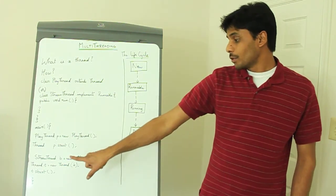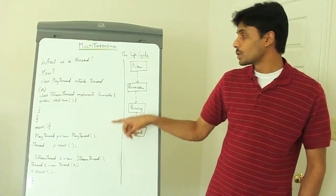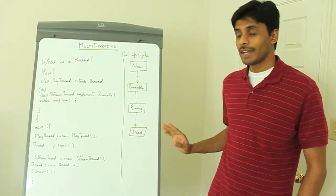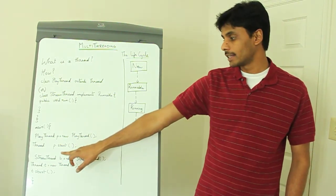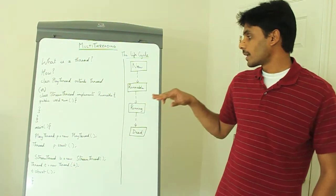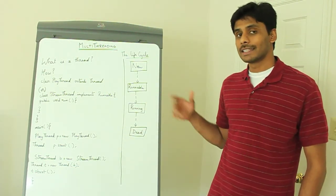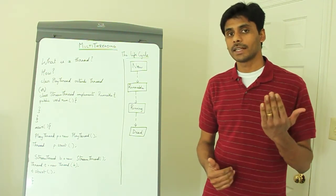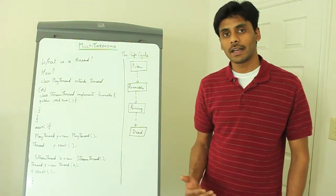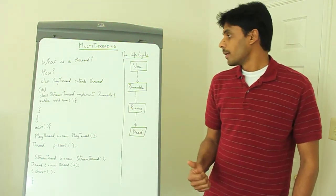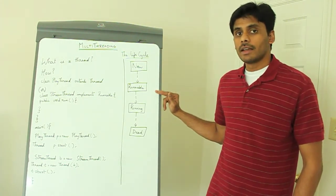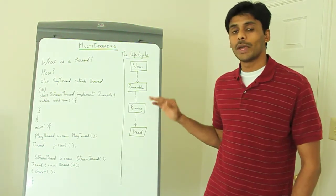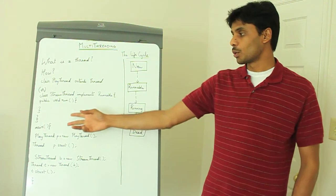When you create an instance of a Thread class, the thread goes into the new state within the thread lifecycle. When you invoke the start method on the thread instance, it moves to the runnable state. At this point, the JVM will create a stack for your thread. Just like the main method, your new thread will have its own stack and its own execution flow. From the runnable state, it is up to the JVM thread scheduler to move it to the running state and execute the application code within the run method.